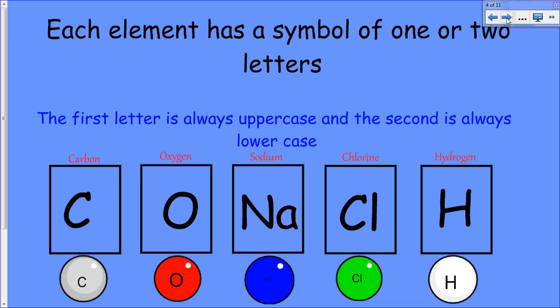Each element has a chemical symbol of one or two letters. The first letter is always uppercase and the second is always lowercase. Carbon, oxygen, sodium, chlorine, and hydrogen are some examples.